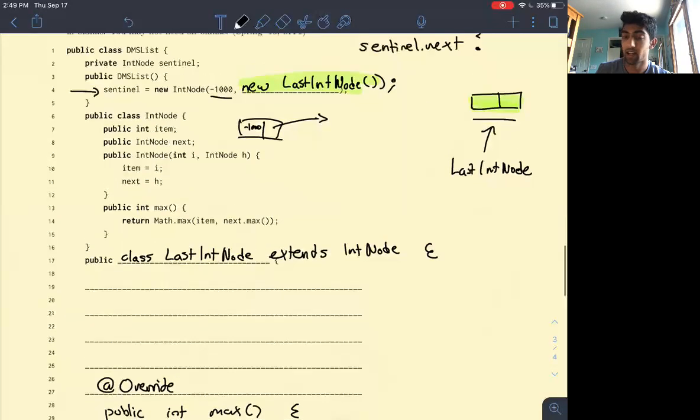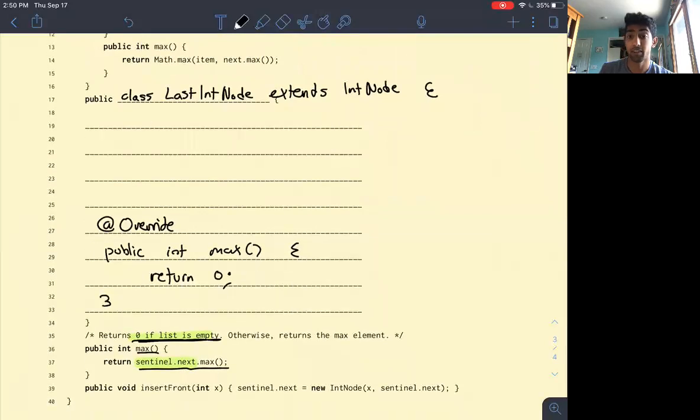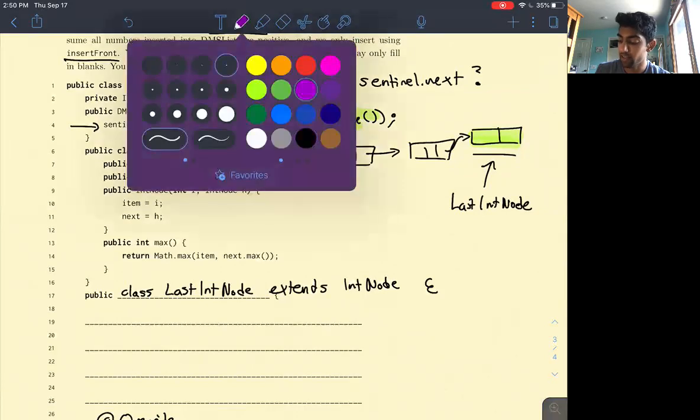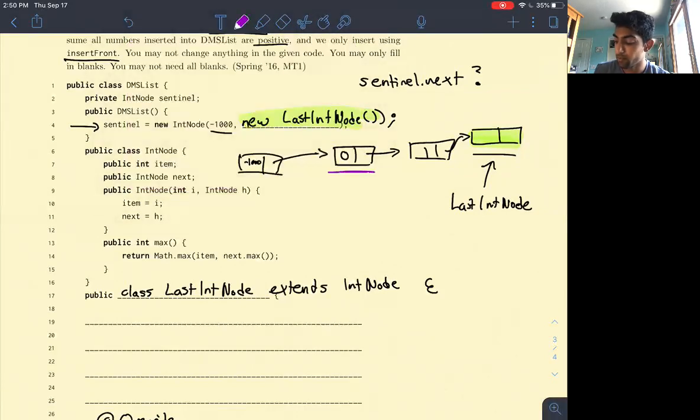So if we insert the values 1 and then 0, we will get a list that looks like this, right? So what'll happen is if we call sentinel.next.max with the current state of our linked list or our DMS list, what'll happen is we will call the max function here, which we'll call the max function here, which we'll call the max function here and return 0.